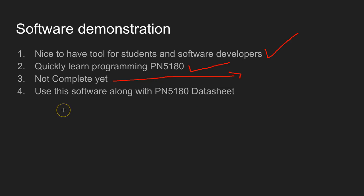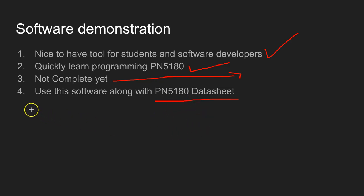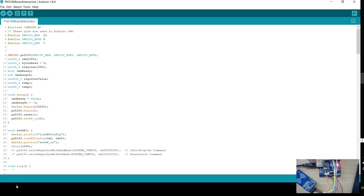This software will be very useful if you use it along with the PN5180 data sheet — it will be easier to understand the data sheet as well. Gradually in this video series you're going to learn more and more features about PN5180, using this software. As you can see here, I've connected my PN5180 board along with Arduino, and this doesn't have any level shifter. This is a very small Arduino program compiled along with the library, already uploaded into the Arduino board.